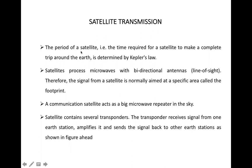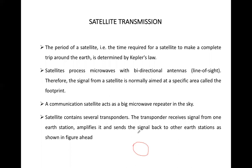The period of a satellite — meaning the time required for a satellite to make a complete trip around the earth — is determined by Kepler's law. Kepler's law uses the distance from the core of the earth to the satellite to calculate how long it will take to complete one orbit around the earth.